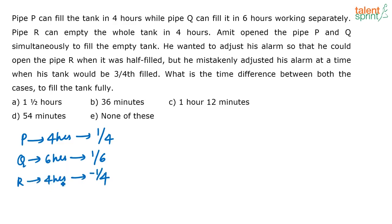Since pipe R is emptying, we put a negative sign in front. Amit opened pipe P and Q simultaneously to fill the tank. He wanted to adjust his alarm so that he could open pipe R when it was half filled, but he mistakenly adjusted his alarm at a time when the tank would be 3/4 filled. What is the time difference between both the cases to fill the tank fully? This question can be approached using the unitary method and using the LCM method.